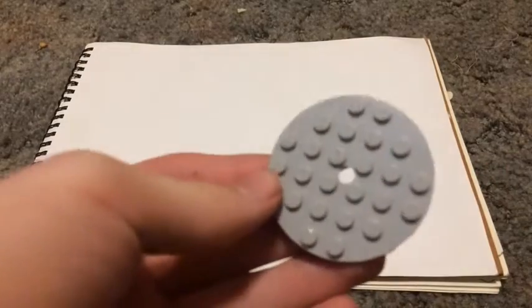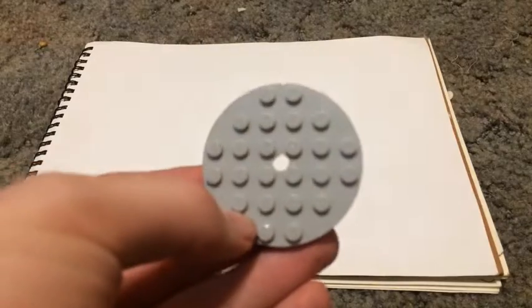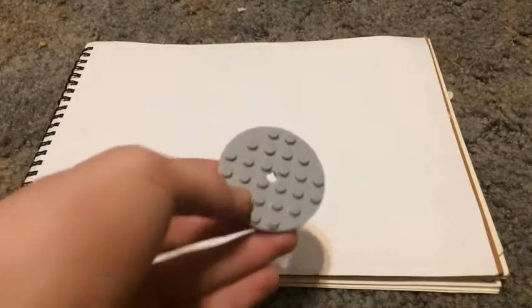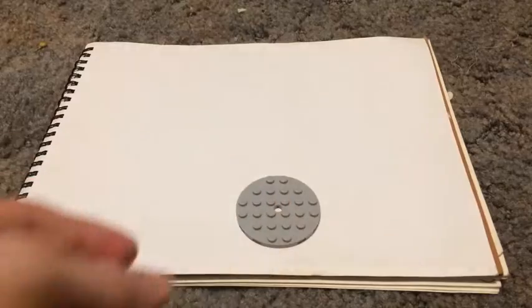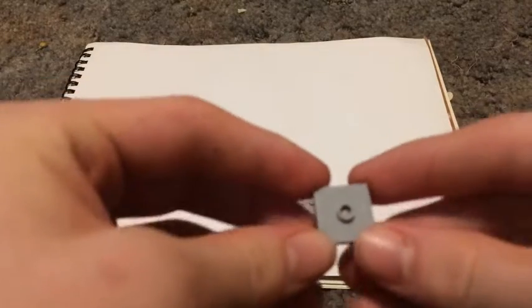Hello, today we'll be building a Lego fish aquarium, so let's get started. First thing you're going to want to do is get a six by six round piece and get a four by four stud in the middle piece.